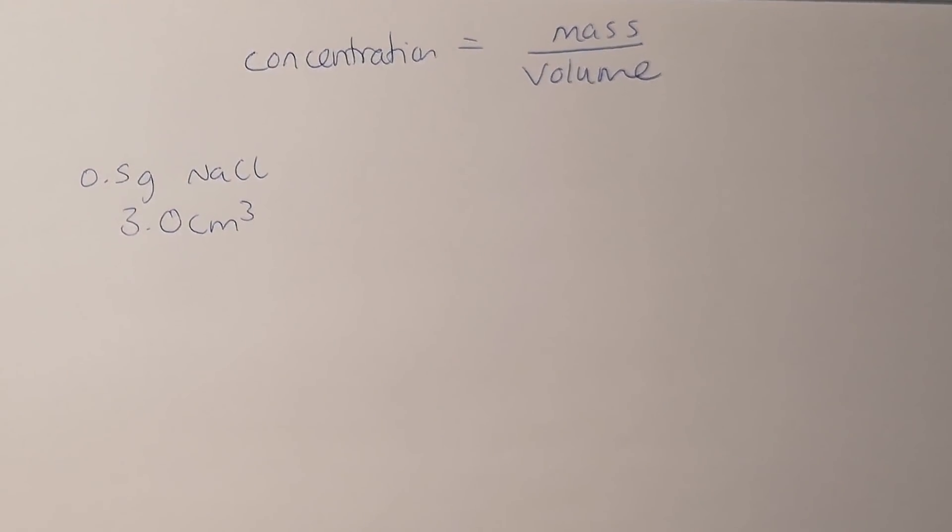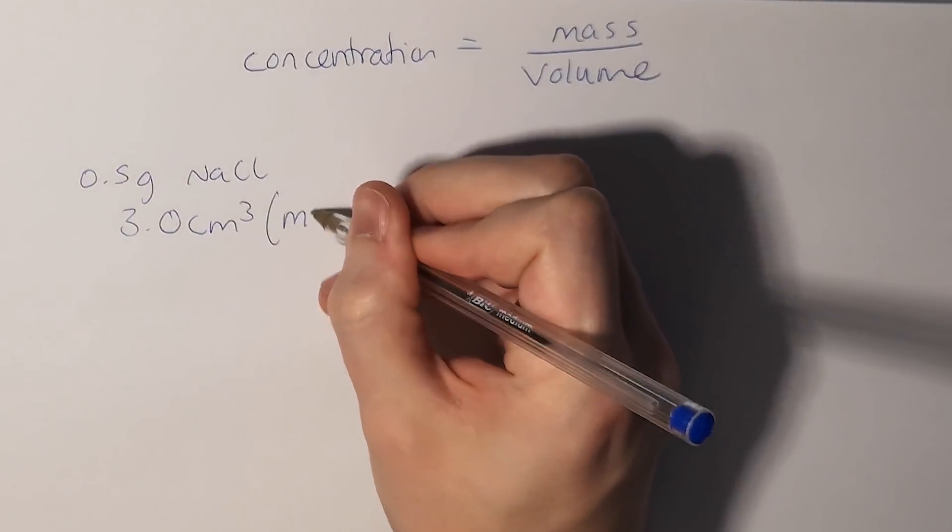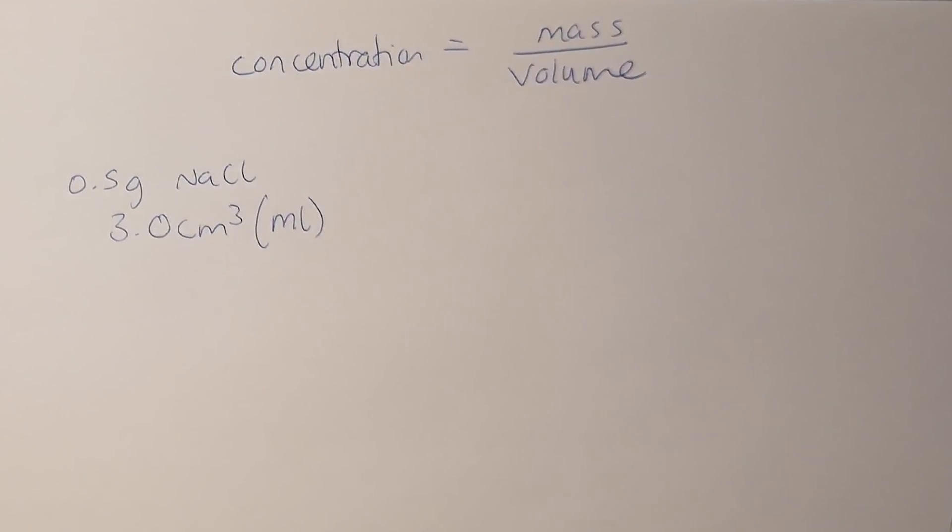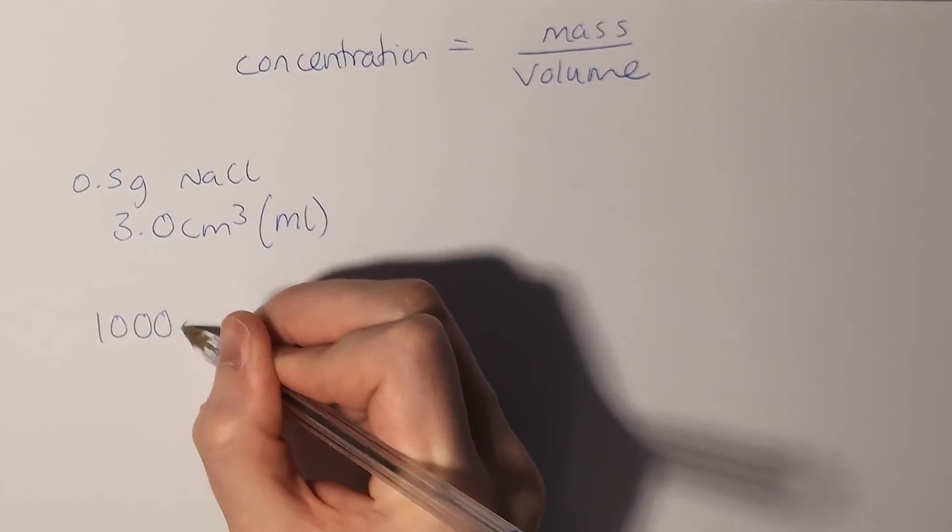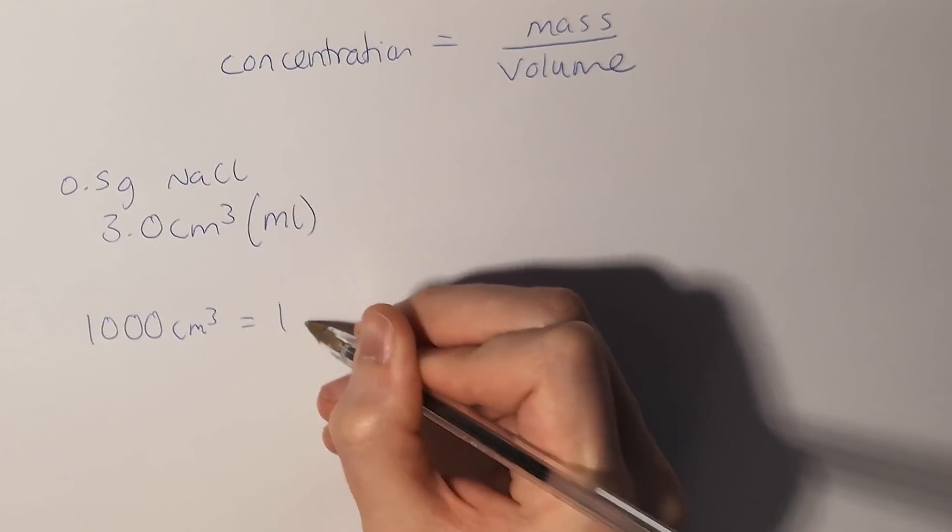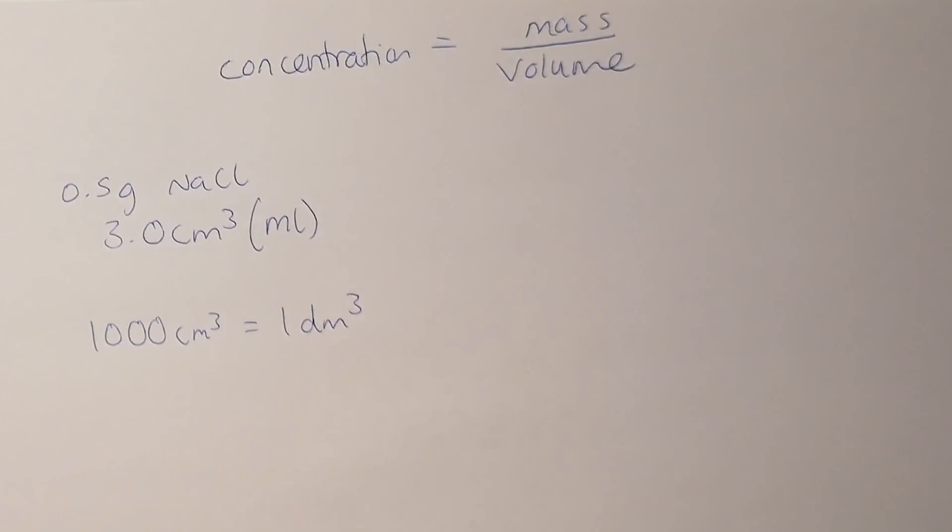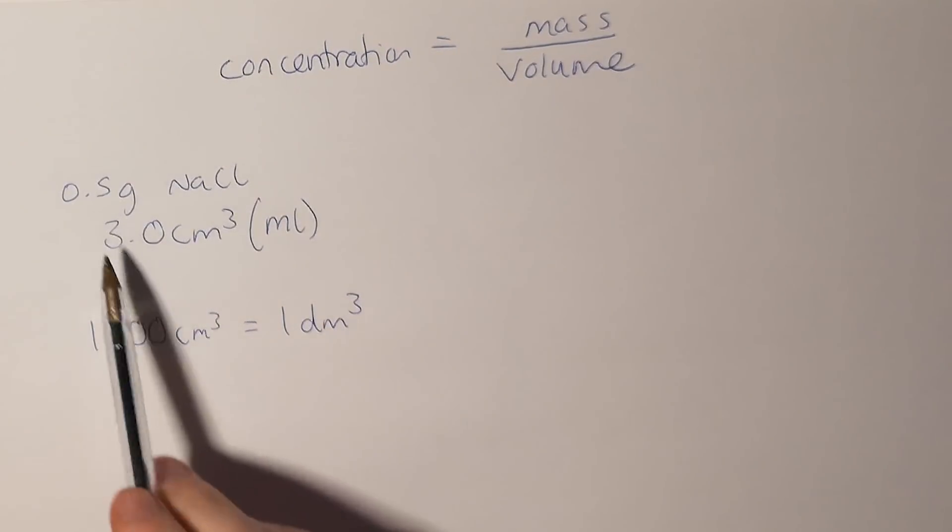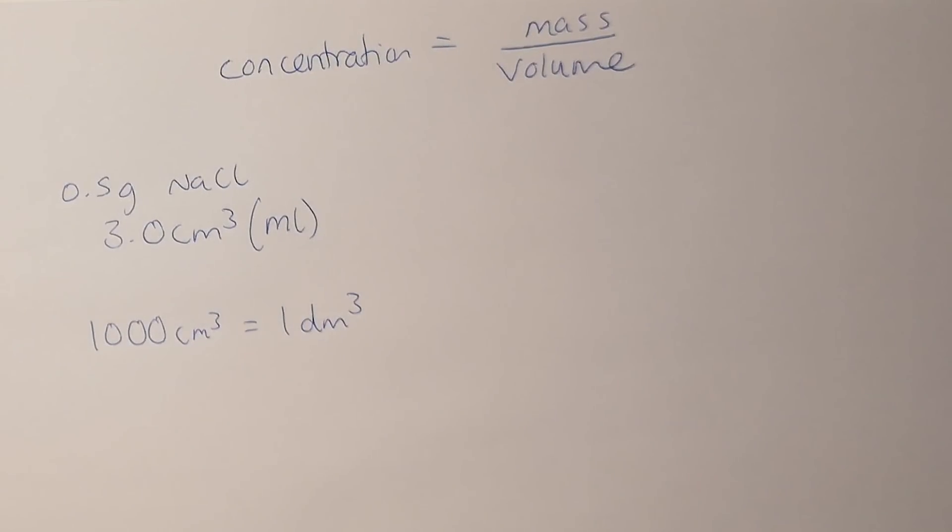Because I've been given my value in centimeters cubed, which is another way of saying milliliters, I actually have to convert it into slightly different units. The units we use in concentration and volume in chemistry are decimeters cubed, and there are 1,000 centimeters cubed in one decimeter cubed. That means whatever our value is in centimeters cubed, we always have to divide it by a thousand before we can use it in our concentration equation.